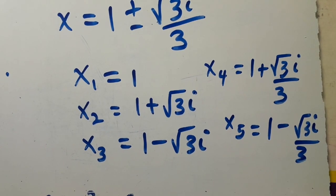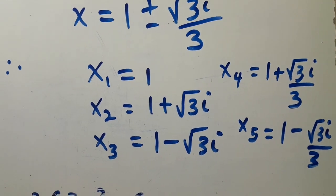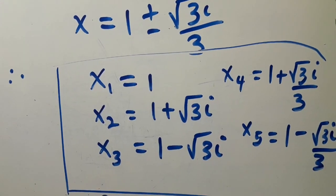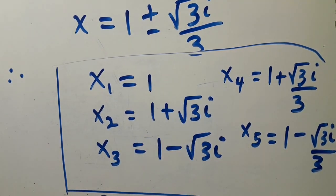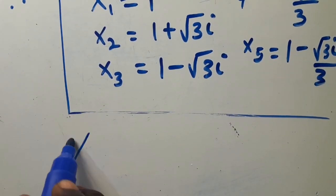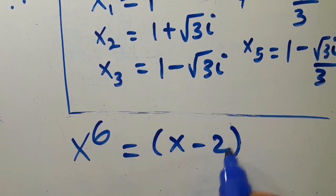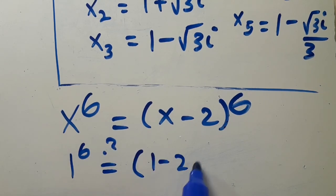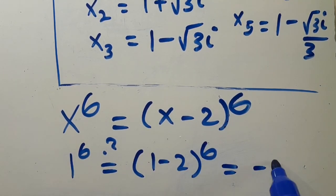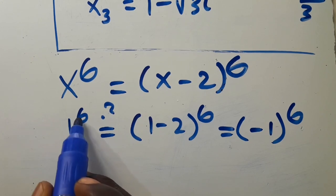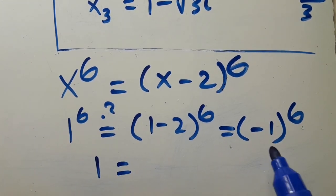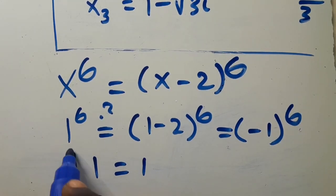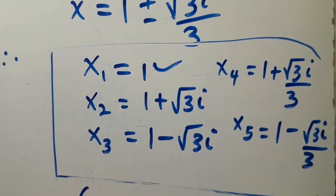So all the solutions are: x₁ equals 1, x₂ equals 1 plus root 3 i, x₃ equals 1 minus root 3 i, x₄ equals 1 plus root 3 i over 3, and x₅ equals 1 minus root 3 i over 3. These are the five values of x. We can verify the real solution: when x equals 1, we get 1 to the power of 6 equals 1 minus 2 to the power of 6, which is minus 1 to the power of 6, and since 6 is even the output is 1. So this checks out. If you found this video interesting, don't forget to like, share, comment and subscribe for more math tutorial videos.